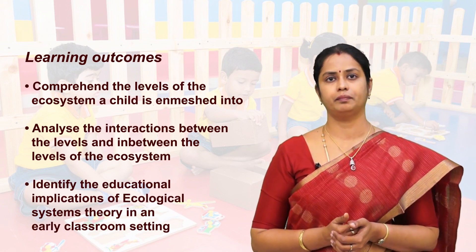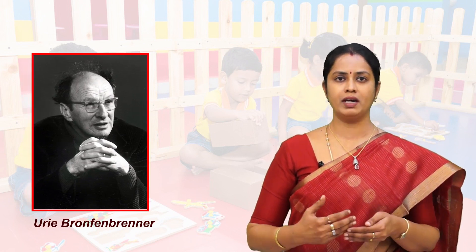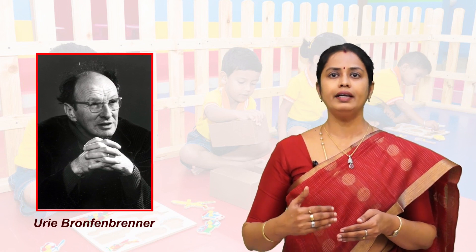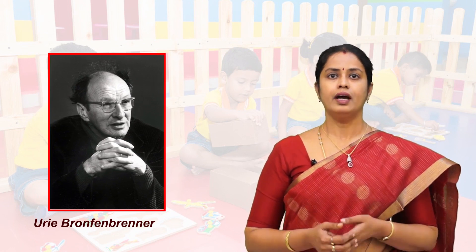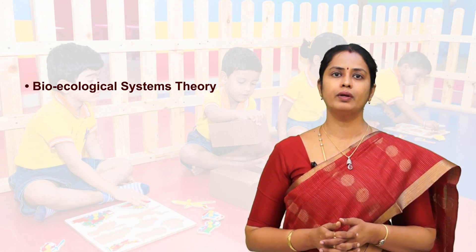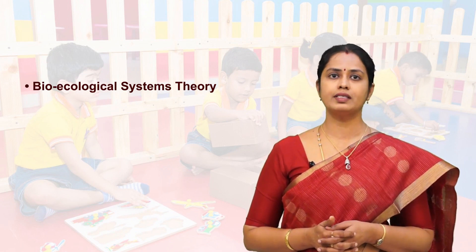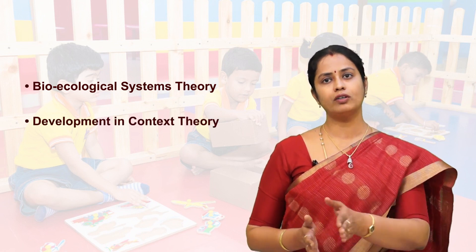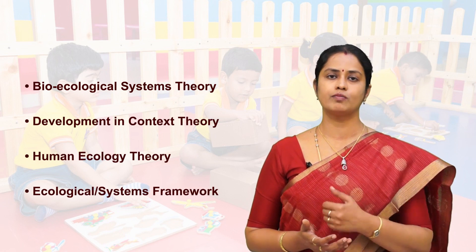Uri Bronfenbrenner, an American psychologist, opened a new sphere of child development with his ecological approach to understanding children. Over the past decade, his approach was renamed as bio-ecological systems theory, and is also known by various other names such as development-in-context theory, human ecology theory, or ecological systems framework.